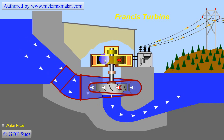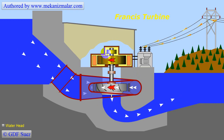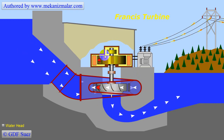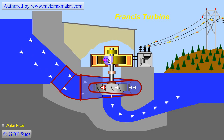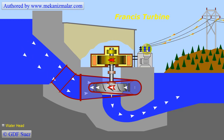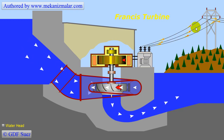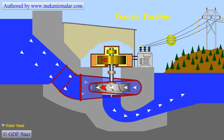The rotational motion of the runner is transferred to an electric generator. The generated electricity is converted to high-voltage current and transferred to the grid to be consumed.